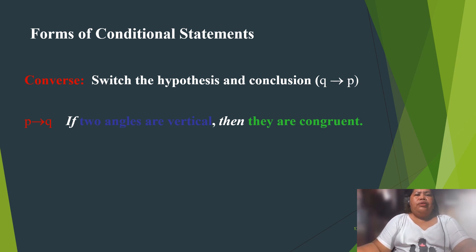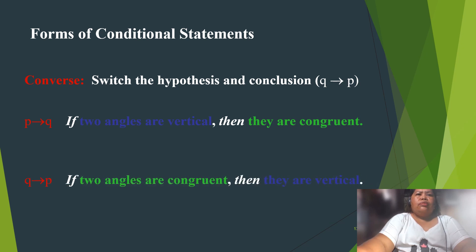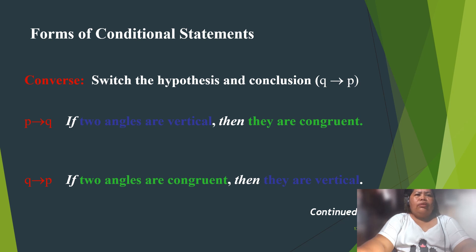For example: 'If two angles are vertical, then they are congruent' — that is if P then Q. In the converse, the conclusion comes first: 'If two angles are congruent, then they are vertical' — that is if Q then P.